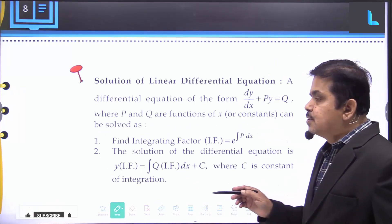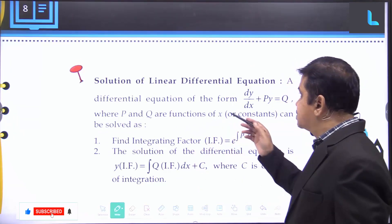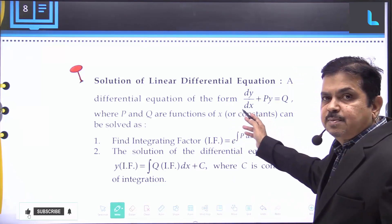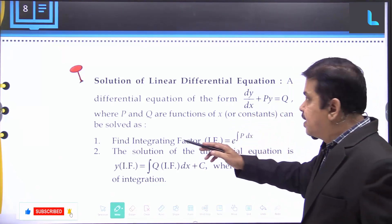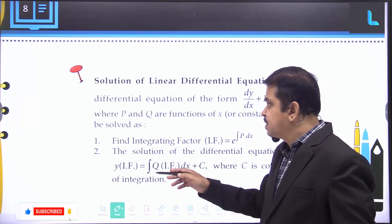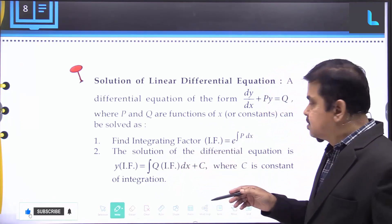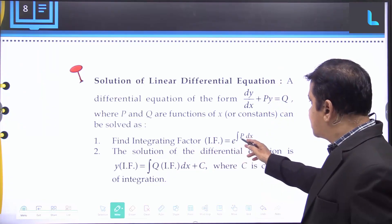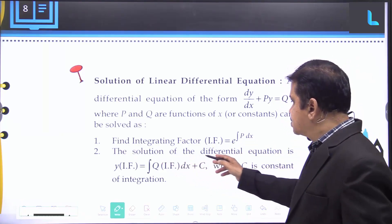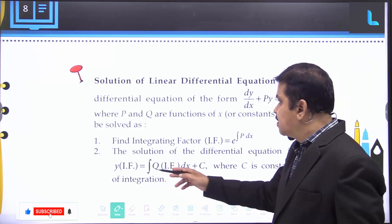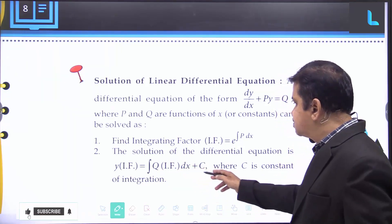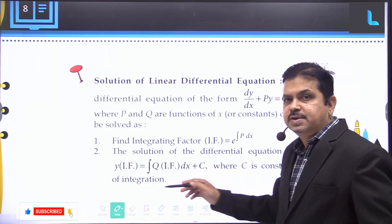To find the solution of a linear differential equation of the form dy/dx + Py = Q, where P and Q are functions of x or constants: step one, find the integrating factor IF = e^(integral of P dx). Step two, the solution of the differential equation is y × IF = integral of Q × IF dx + c, where c is a constant of integration.